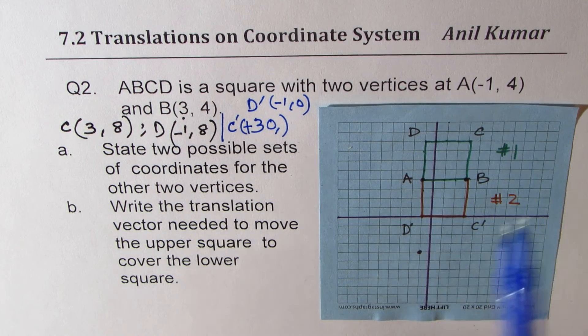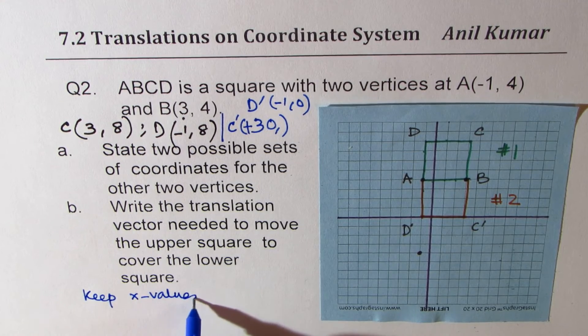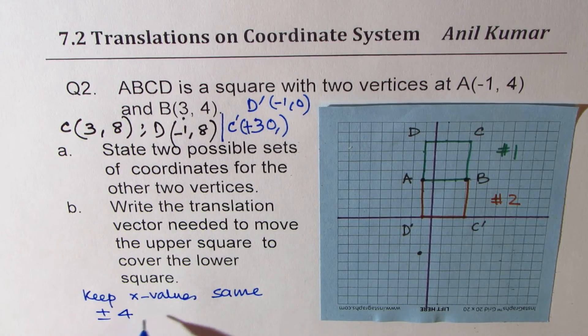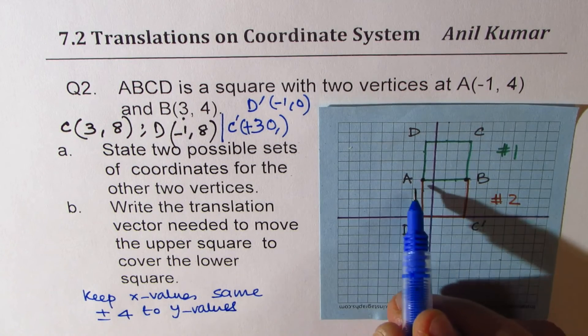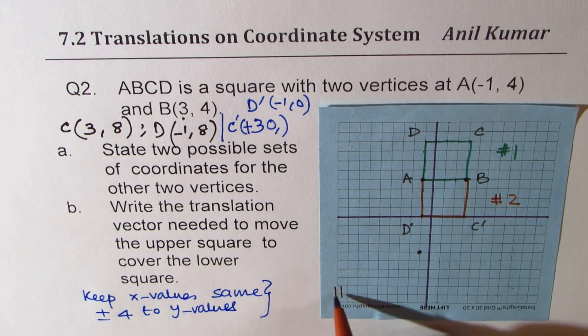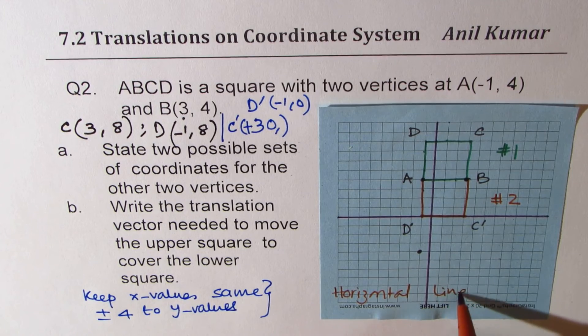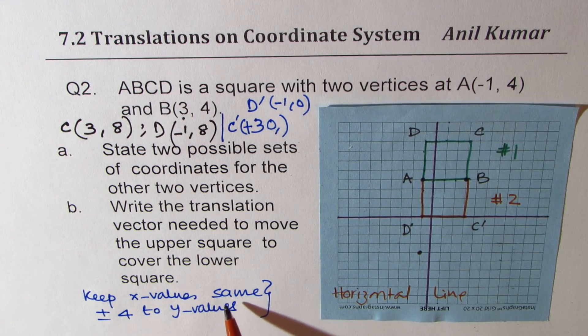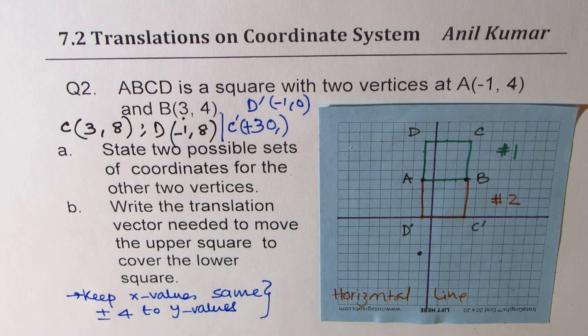The Y values, you could add four or subtract four to get your square. So the strategy is keep X values same, add plus or minus four to Y values. Why did we do so? Because we have a horizontal line. We did so because we have a horizontal line. If the line would have been vertical, in that case, we'll do kind of reverse. So think about it. So that is how you get your two squares.